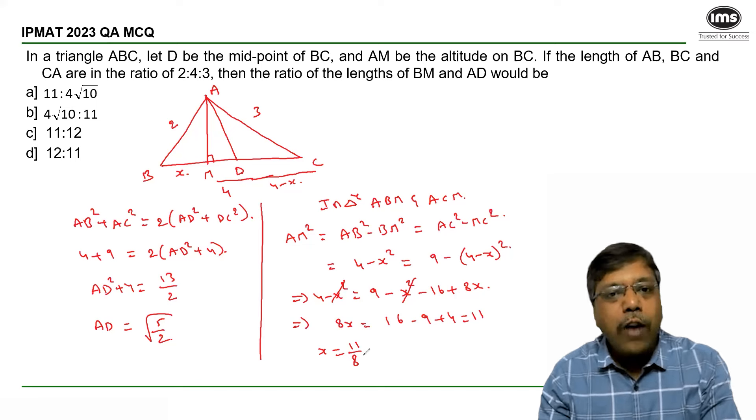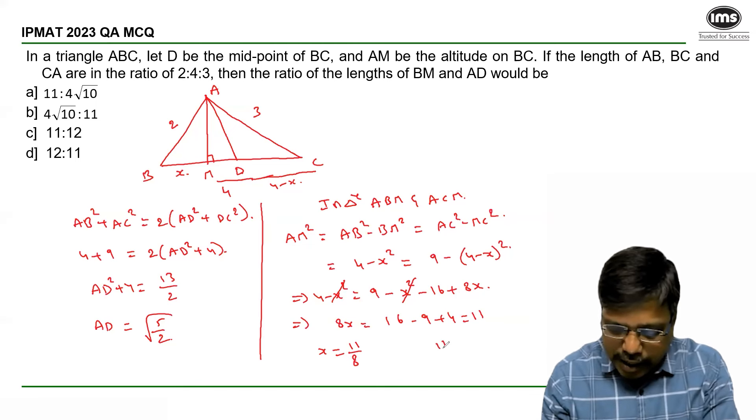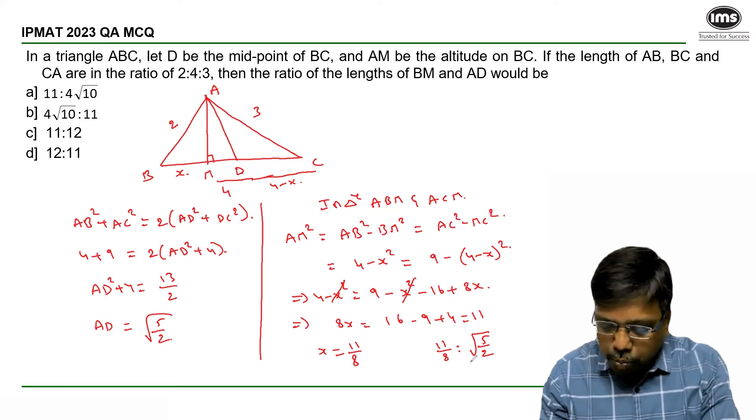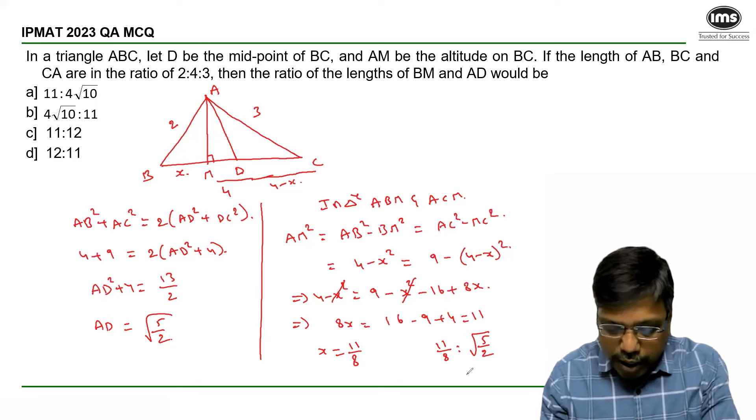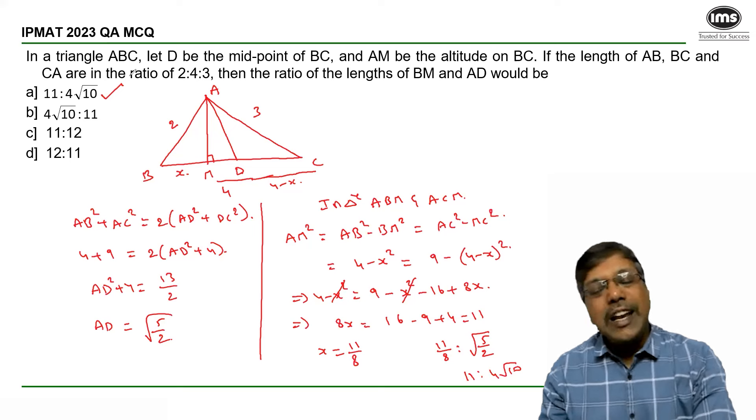The ratio of BM to AD is (11/8) : √(5/2). Multiplying both sides by 8, the ratio becomes 11 : 4√10. Answer option A.